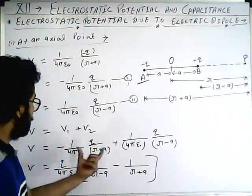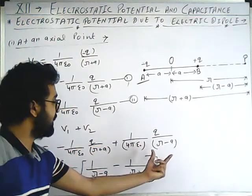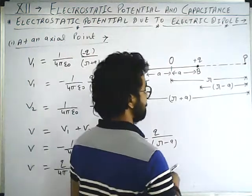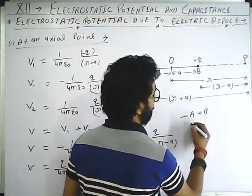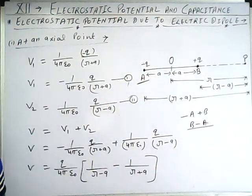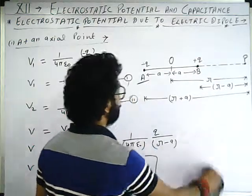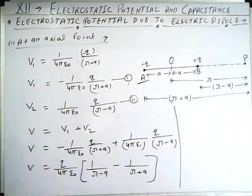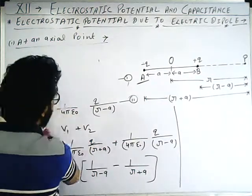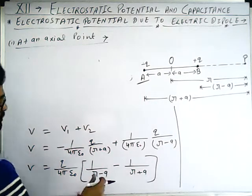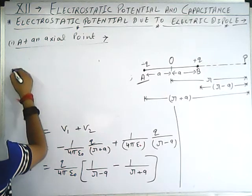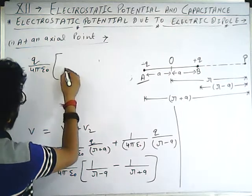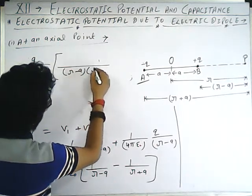Rearranging — the minus term was written after, the plus term first, which is a valid algebraic step since minus A plus B equals B minus A. Now we take the LCM, which will be R squared minus A squared, because multiplying the two denominators gives R minus A times R plus A. So V equals Q upon four pi epsilon naught, with LCM R minus A into R plus A in the denominator, and R plus A minus R plus A in the numerator.